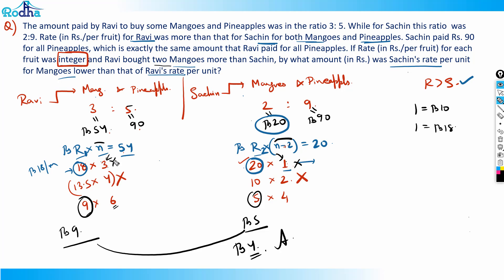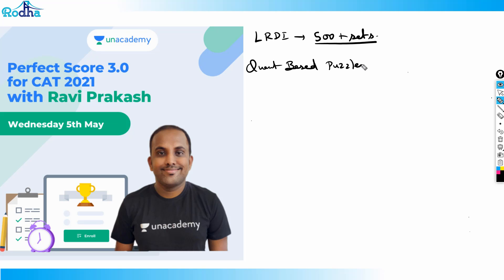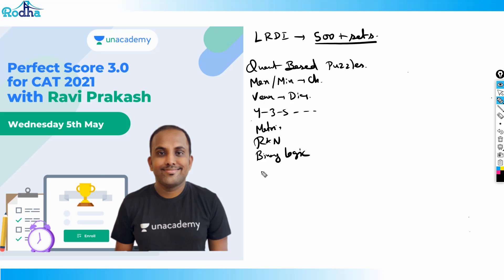At Unacademy, this live class series continues as a course for LRDI covering 500 plus sets solved live. Topics include quant-based puzzles, maximum-minima, chocolate distributions, Venn diagrams with four to six parameters, three to five parameter puzzles, matrix-based puzzles, routes and networks, and binary logic.